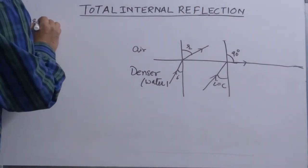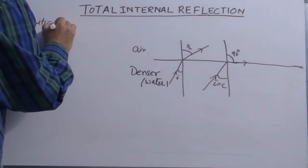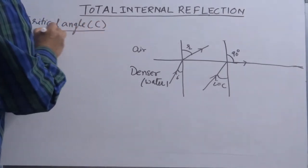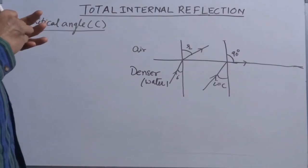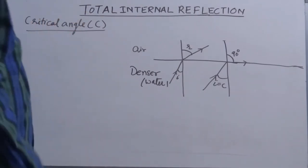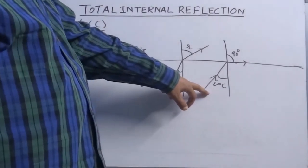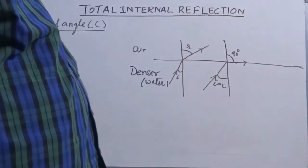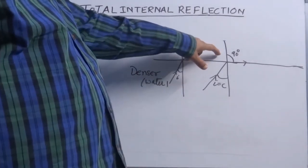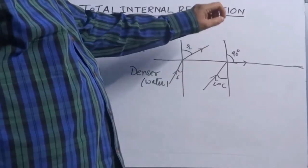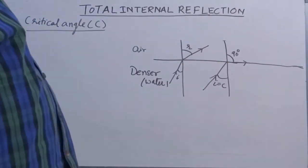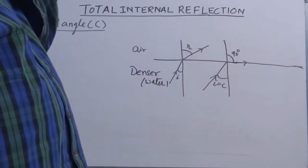So what is the critical angle? It is an angle of incidence in the denser medium at which the angle of refraction in the rarer medium becomes 90 degrees, or the refracted ray becomes parallel to the interface.